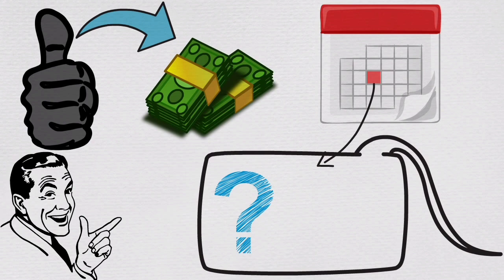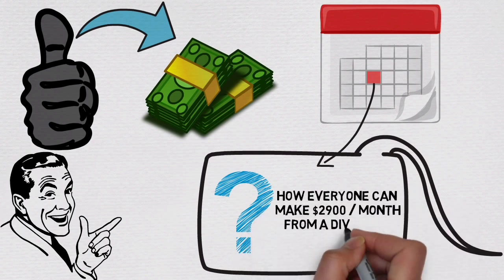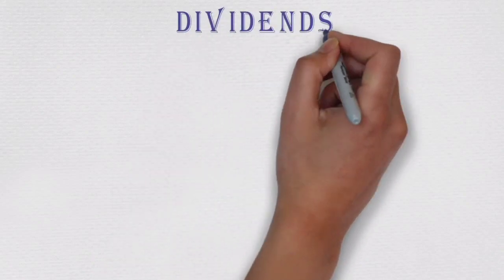Today, we will calculate how everyone can make $2,900 per month from dividends. Firstly, let's understand what are dividends.